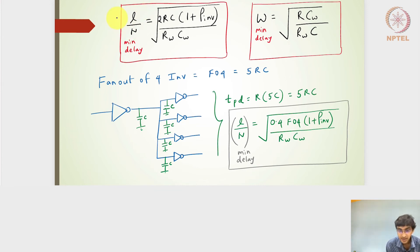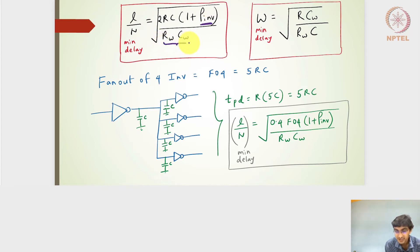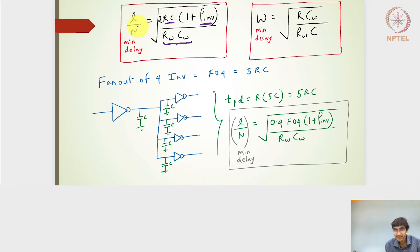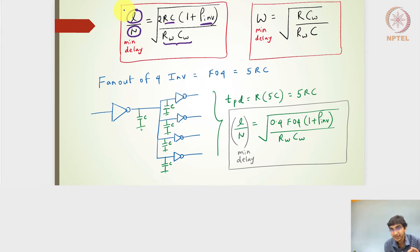The best l/n for minimum delay turns out to be the square root of 2rc·(1 + ρ_inv) divided by rw·cw, where rw and cw are wire characteristics and r and c are the unit inverter switching resistance and capacitance. The optimum w is given by the square root of r·cw divided by rw·c.